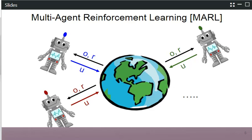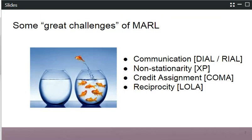This leads to a number of challenges in multi-agent settings. For example, agents may need to learn to communicate — we did a paper on this at NeurIPS 2016 where agents learned to discover communication protocols. Also, because all other agents in the environment are learning, the environment appears non-stationary from the perspective of any given agent — we published work on this at ICML 2017. Furthermore, there is the credit assignment problem: it's unclear what each individual player contributes to the success of the team. We published work on this using a counterfactual baseline that teases out individual agent contributions to the overall team reward.